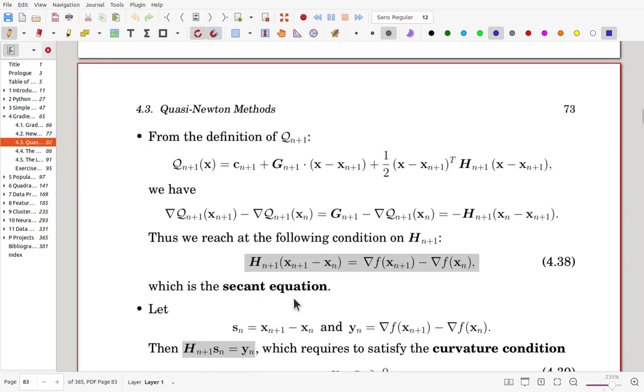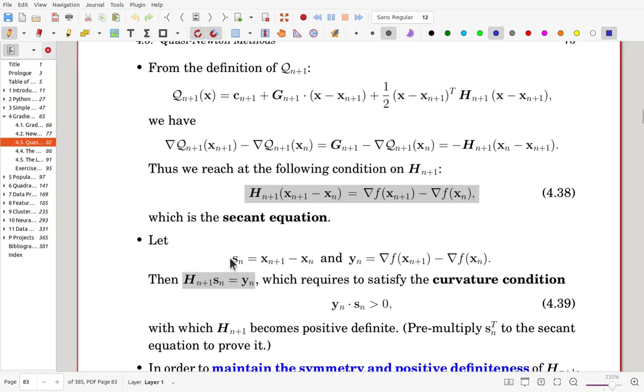This is called the secant equation. Now for simplicity, we are using new notations. Sn is defined to be that portion, Yn is defined to be that portion. Now the secant equation can be written in this form. Now this one requires to satisfy curvature condition.